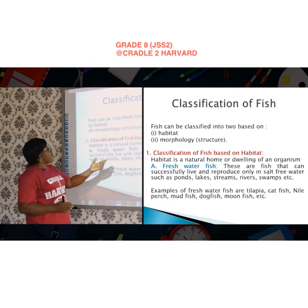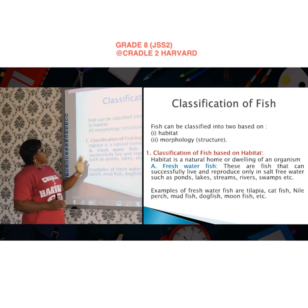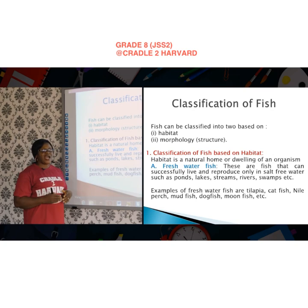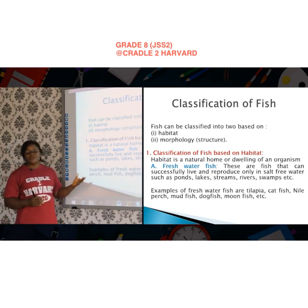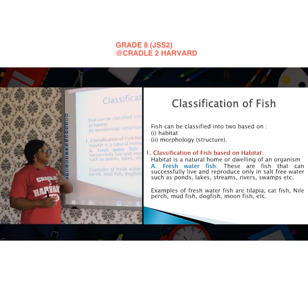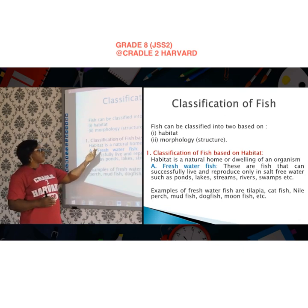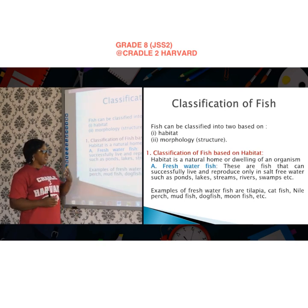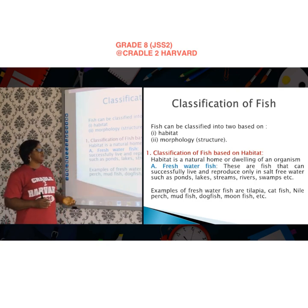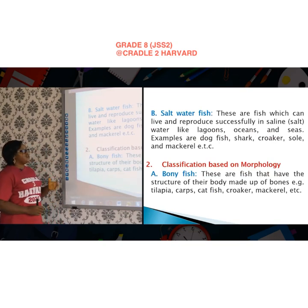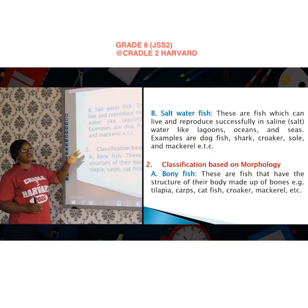Examples of freshwater fish are tilapia, catfish, Nile fish, mudfish, dogfish, and moonfish, among others. Freshwater bodies where these fish are found include ponds, lakes, streams, rivers, and swamps.